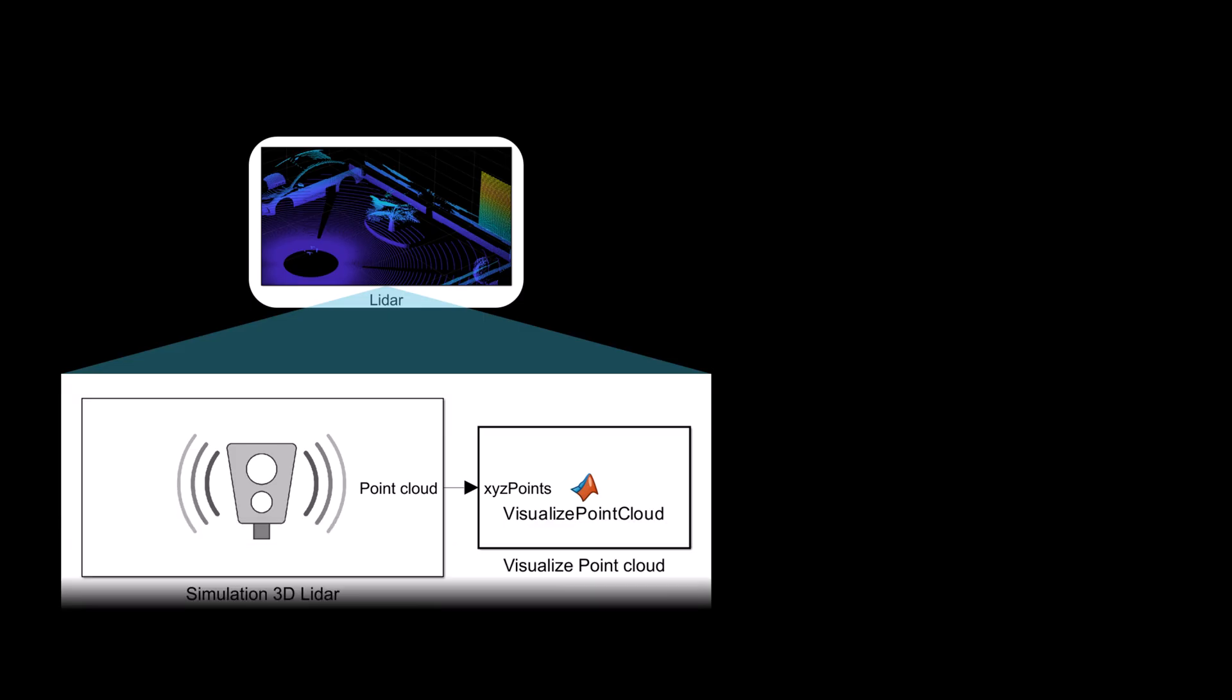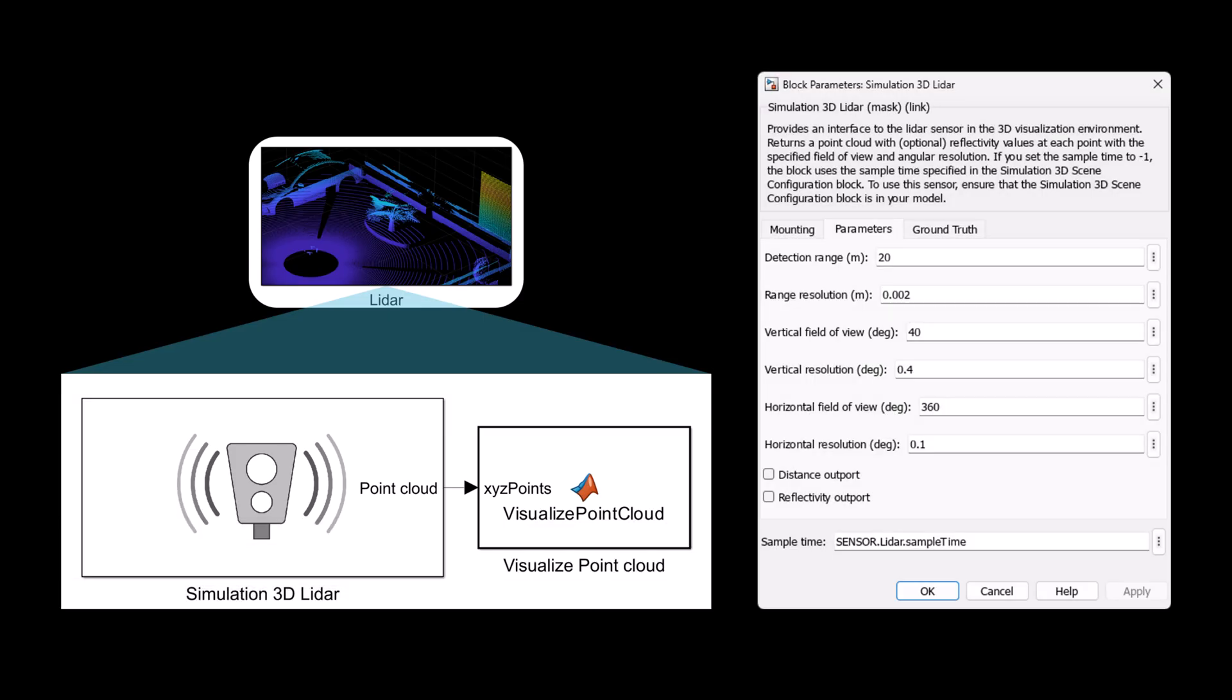In Simulink, the LiDAR model generates a point cloud object, which represents the 3D structure of the environment by measuring distances to objects using laser pulses. Simulink allows you to model the sensor's characteristics, such as range, field of view, angular resolution and scan rate. You can also introduce noise into the LiDAR data to reflect real-world imperfections.